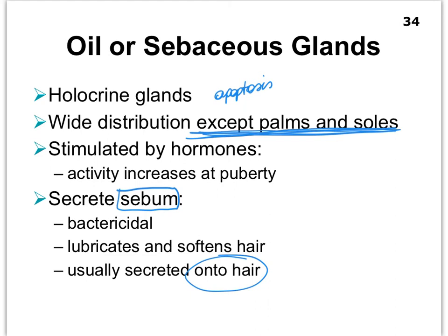What is the function of this sebum — that oily substance for our hair? It's really going to function as a natural conditioner for our hair. It lubricates and softens our hair, and it also functions as a bactericidal — something that kills bacteria, similar to how homicidal refers to killing humans. You can also argue that sweat is bactericidal because of the antibodies, the dermcidin, and its lower pH.